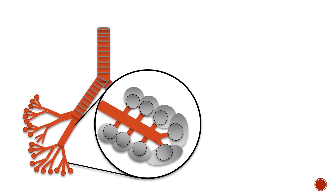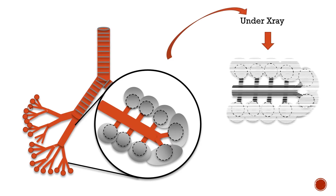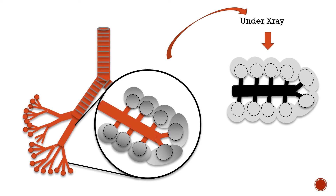Now let's understand the radiological aspect of this disease. The lungs can be divided into respiratory tract, alveoli, and interstitium. HMD involves not only the alveoli but also the surrounding interstitium, and you can see a grayish hyaline membrane in it. Importantly, the respiratory tract from the bronchi to the terminal duct is still patent and functional, so they contain air.